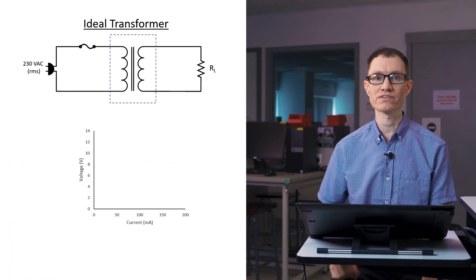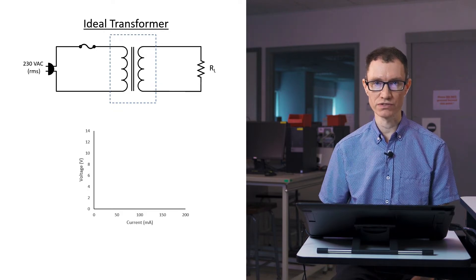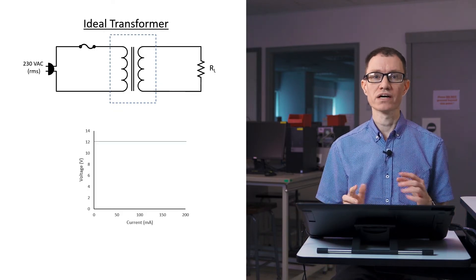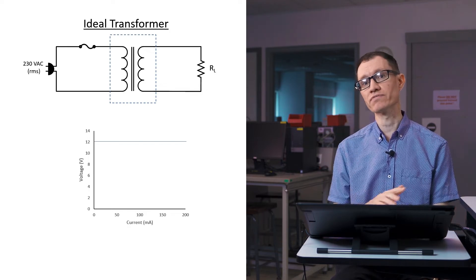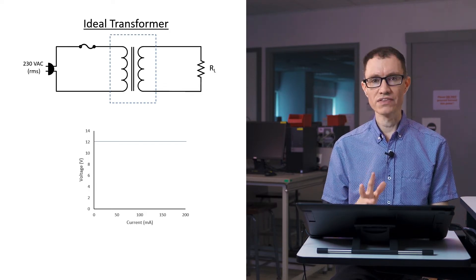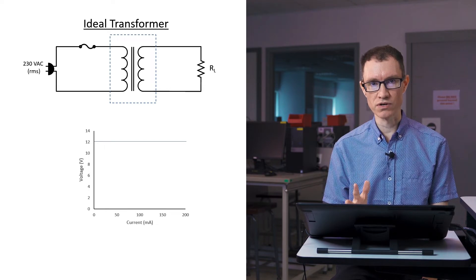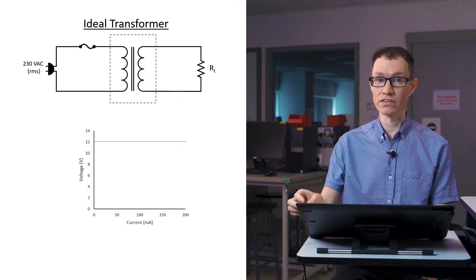Let's consider what the voltage versus current plot would have been if this had been an ideal transformer rather than the transformer that we actually measured. It would have just been a straight line. An ideal transformer would give us the same voltage irrespective of the current coming out of the secondary through the load resistor. In this case, it's a 12 volt transformer so it would have been a flat line here on the plot.